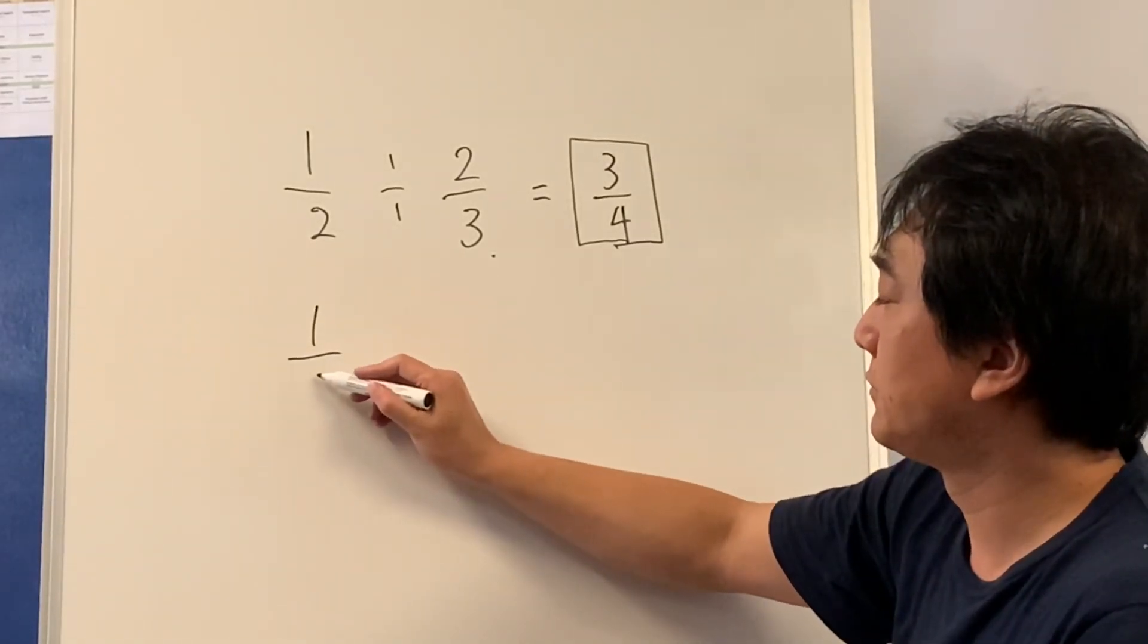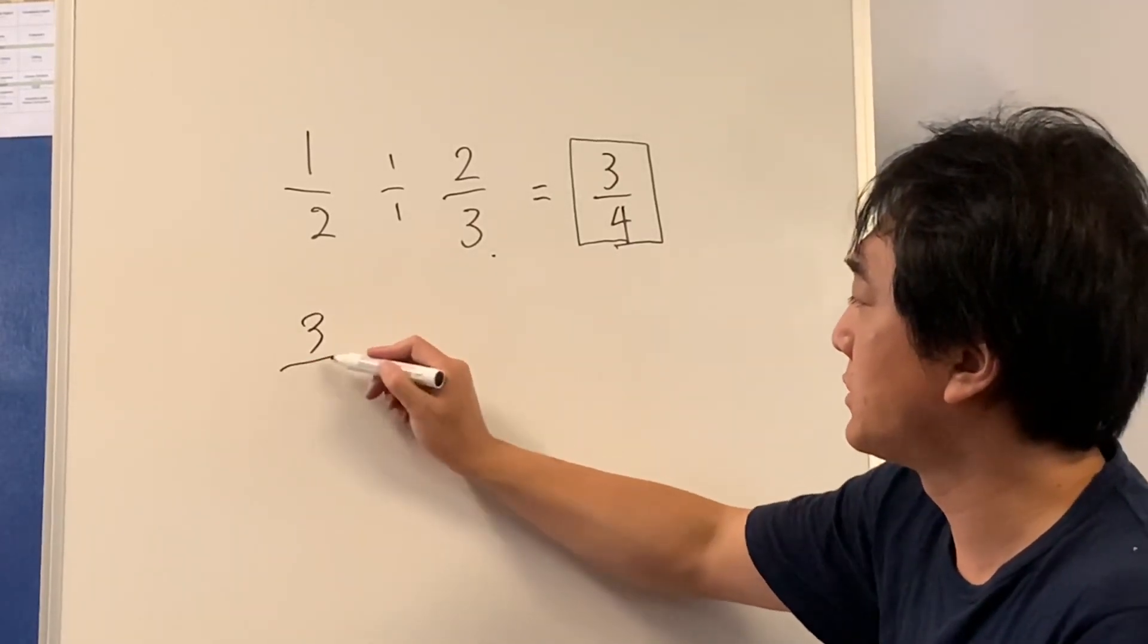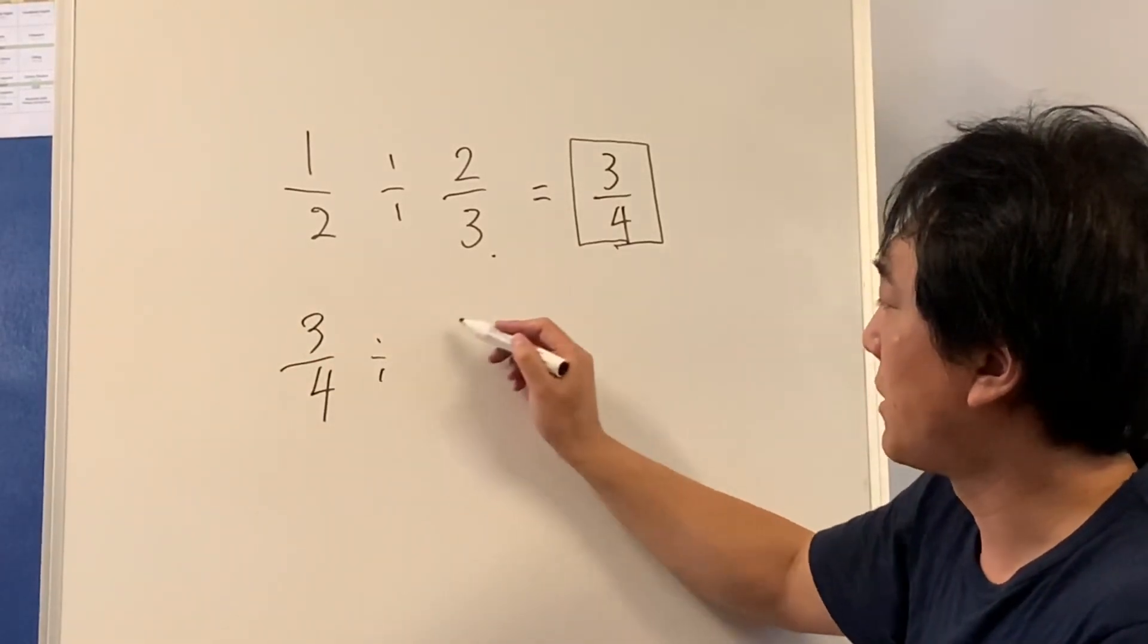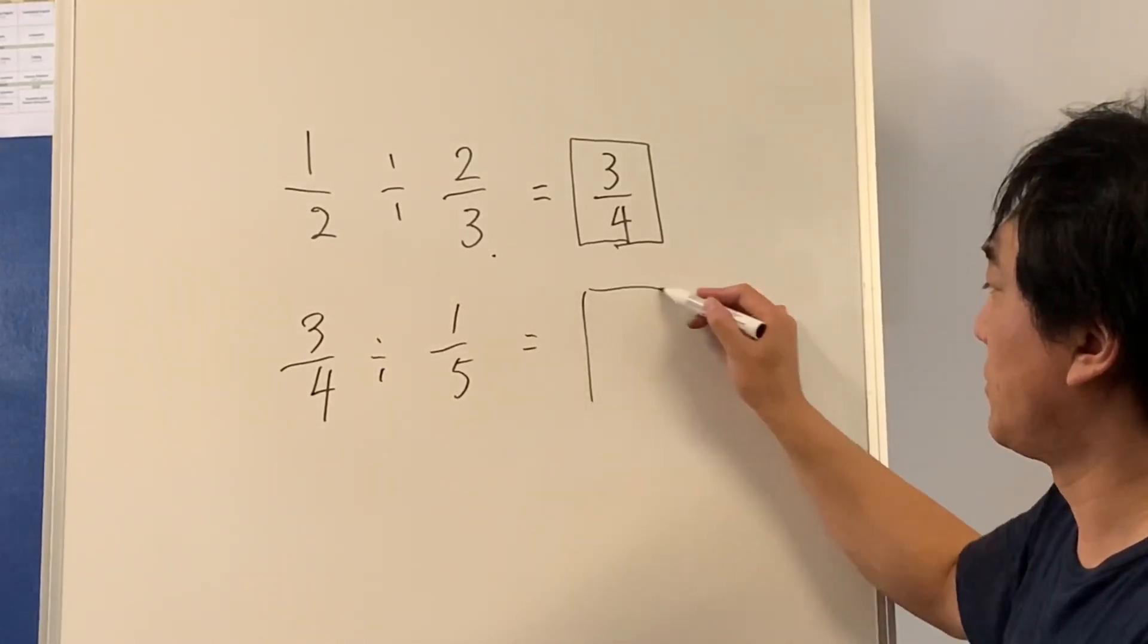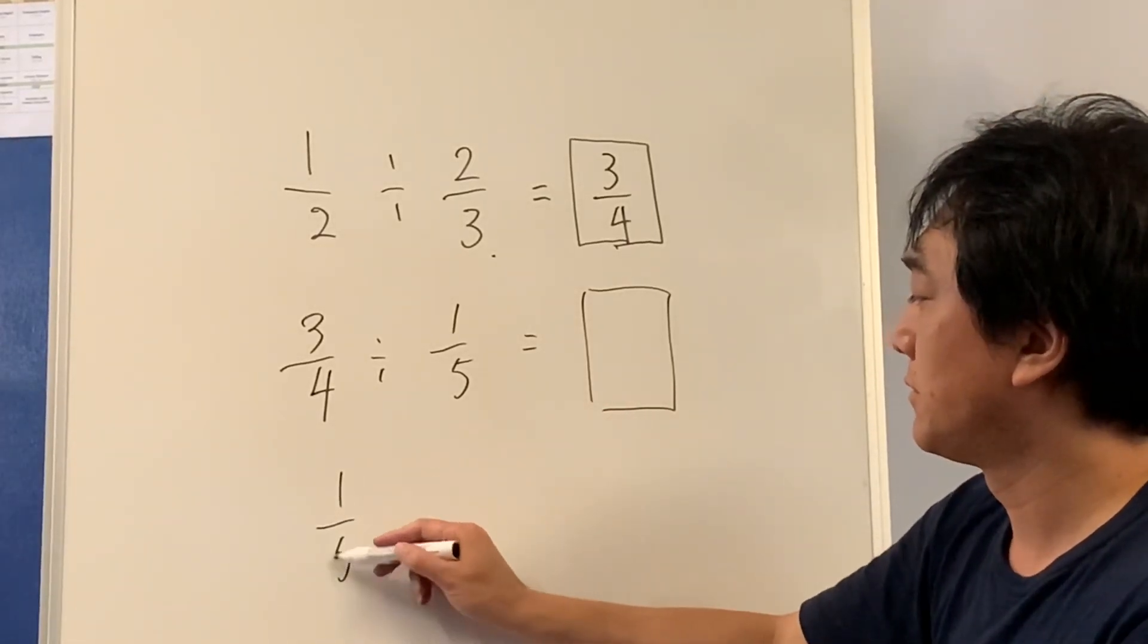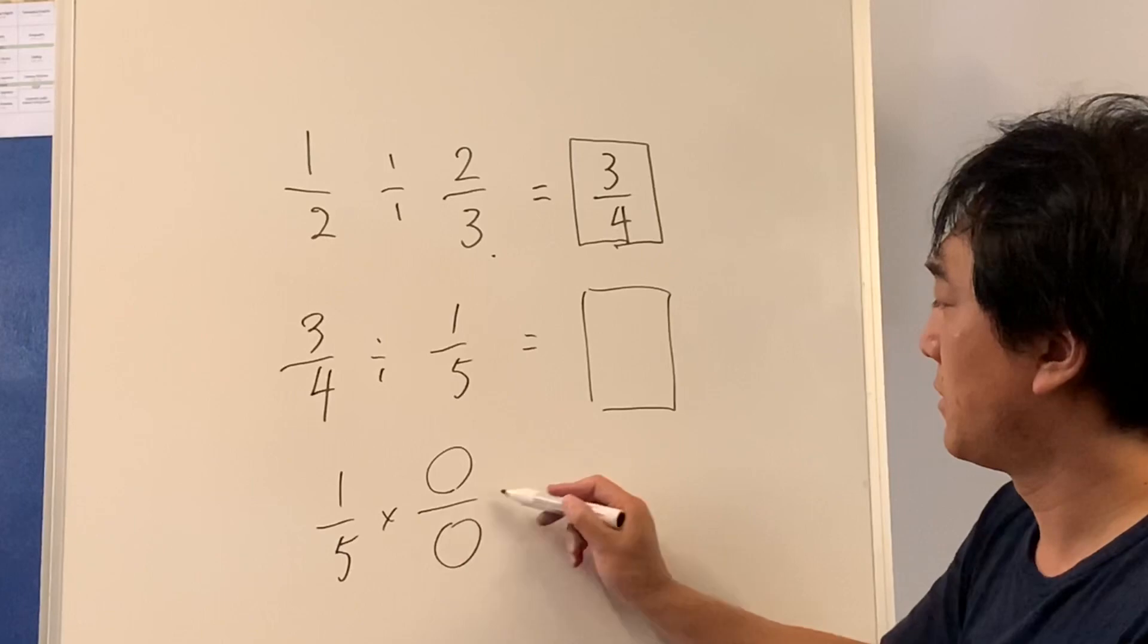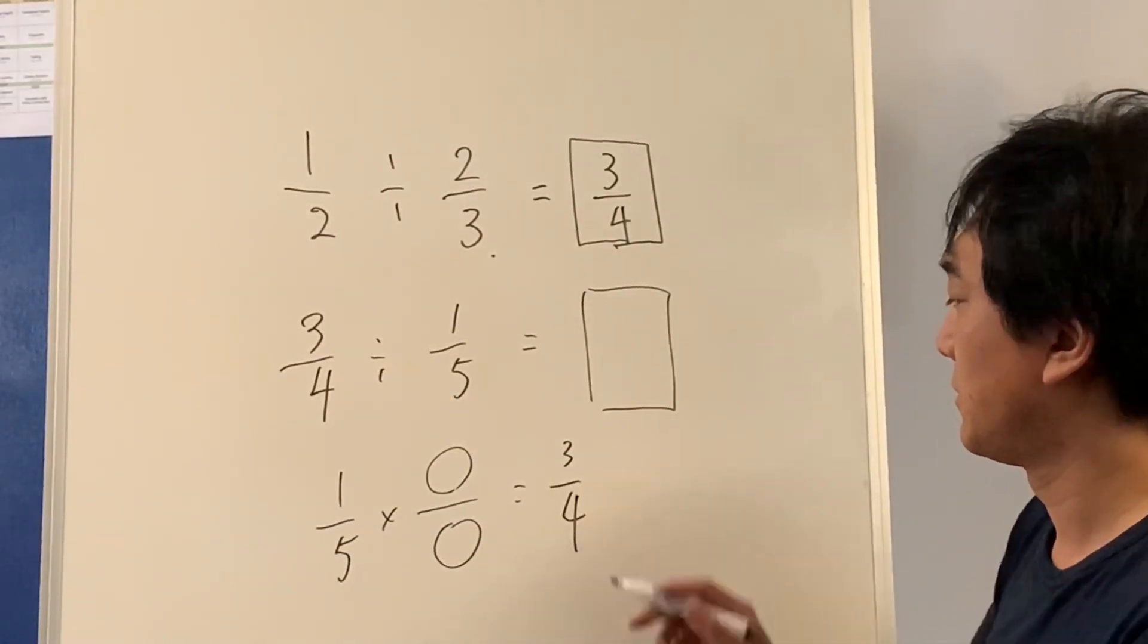How about one quarter? Let's make it slightly bigger. So three quarters divided by one fifth. We don't know what this is, but if I multiply these two numbers, the answer should be three quarters. Right?